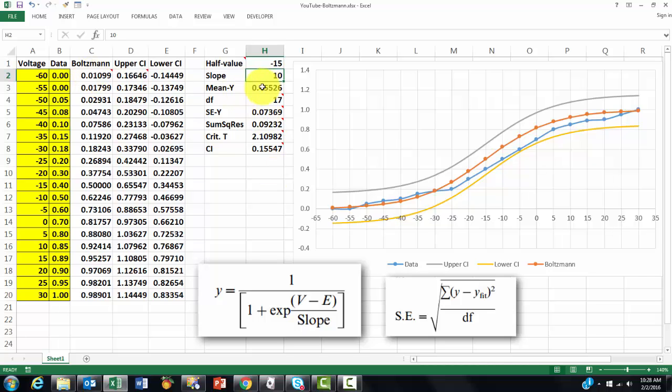Then we calculate the mean y, which is just the average function of all the column b values. The degrees of freedom is count all the b values minus the count of a1 through h2, which is the number of parameters we use, these two. So those are the degrees of freedom.